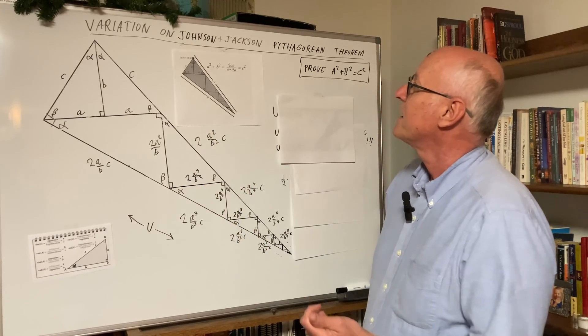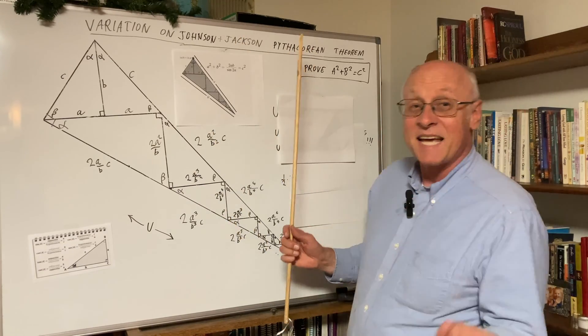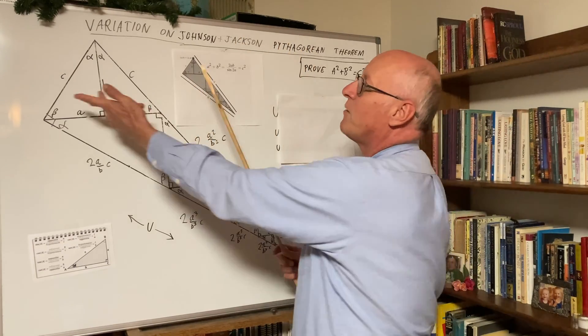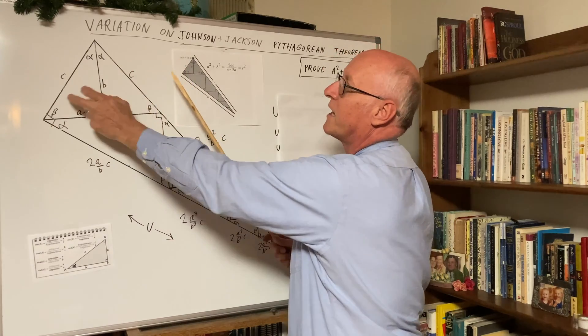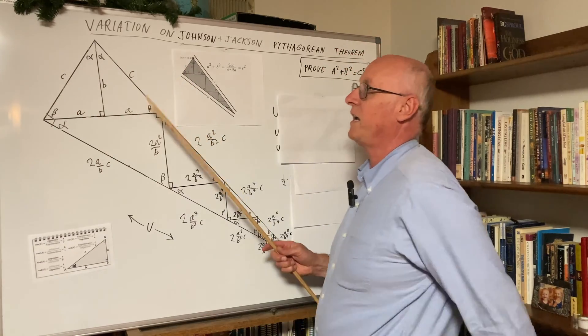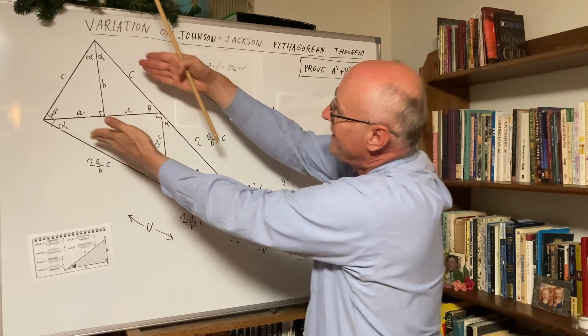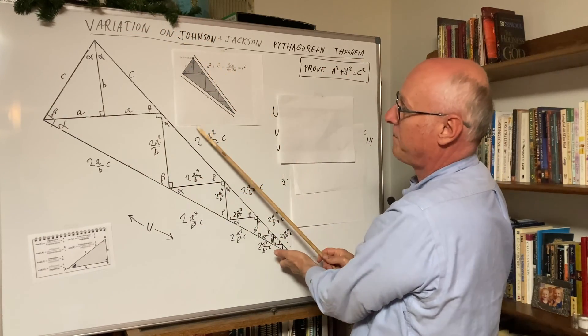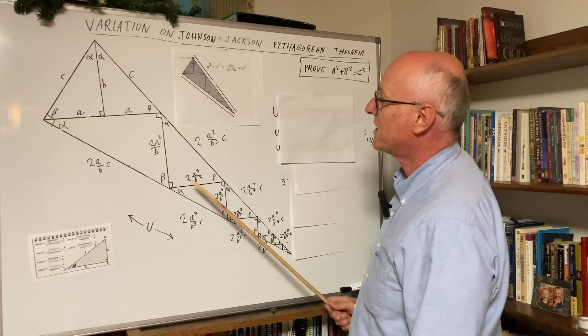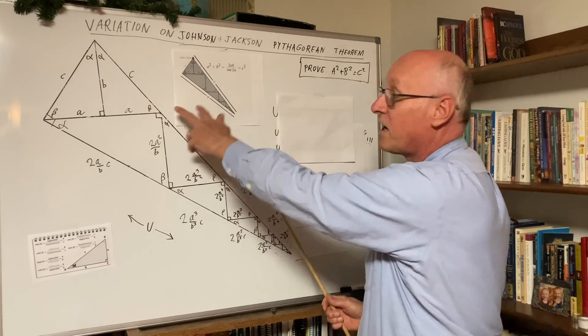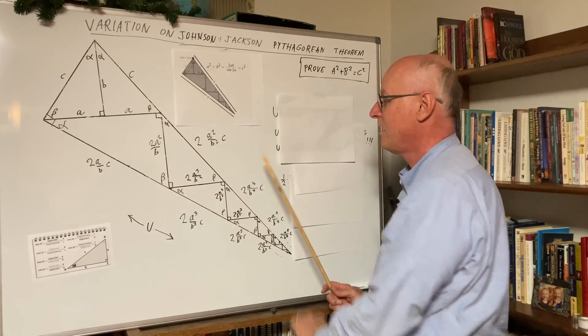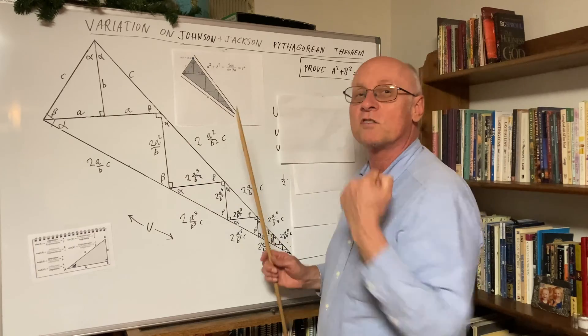The Johnson and Jackson setup, basically what they've done was they've duplicated this original triangle, and then they draw lines to where they intersect, and they essentially make a staircase, a ladder, of similar triangles.